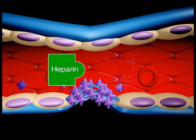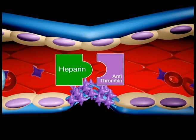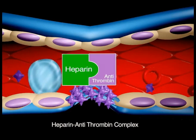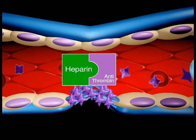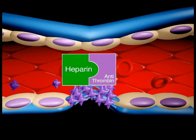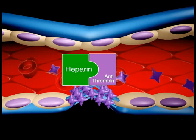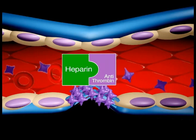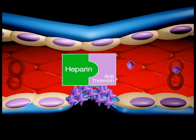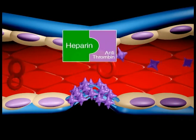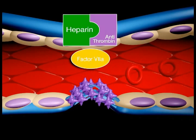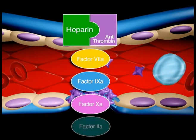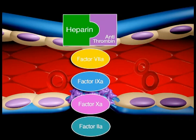Active heparin molecules bind tightly to antithrombin and cause a conformational change in this inhibitor. The conformational change of antithrombin exposes its active site for more rapid interaction with the proteases, the activated clotting factors. Heparin-antithrombin inactivates factor VIIa or tissue factor, IXa, Xa, and IIa or thrombin, thus inhibiting clotting.